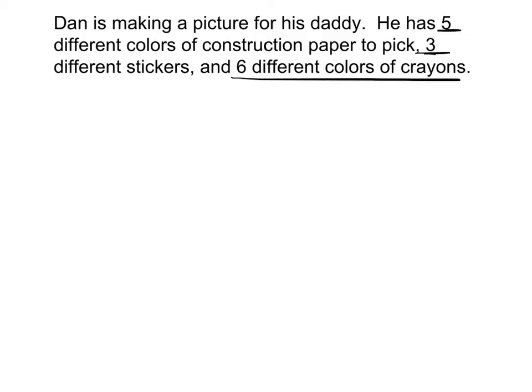Let's say he's allowed to pick one piece of construction paper, one sticker, and he's only going to be able to use one crayon. All we would simply do is multiply 5 times 3 times 6. He can make 90 different pictures. That's all the fundamental counting principle is.